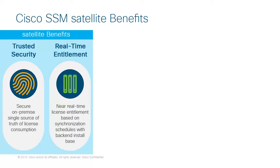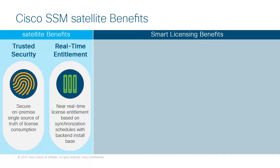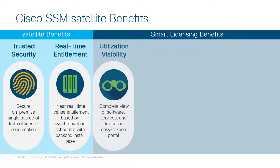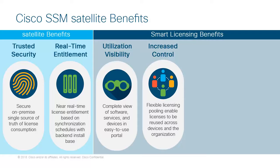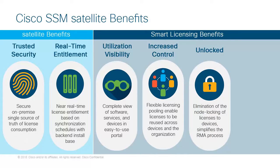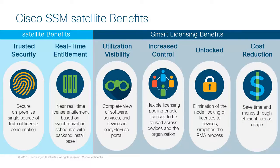Because CSSM Satellite is a component of smart licensing, users also receive the benefits from smart licensing, including: having a complete view of all the licenses and devices you own in a central location; owning pooled licenses that can be used across various organizations within the company; no longer dealing with the node locking of licenses to devices, making RMA simple and easy and removing TAC involvement in the re-hosting of PAC keys; and saving time and money through more efficient license usage.